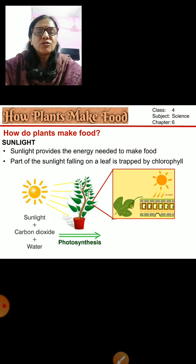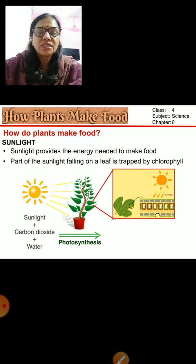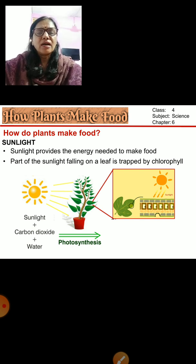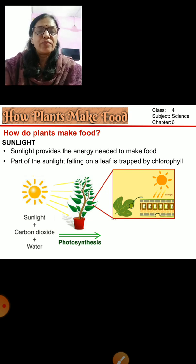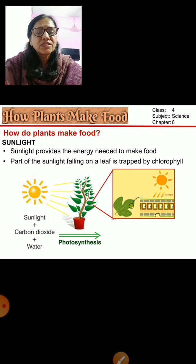As you know, photosynthesis is the process responsible for plants to make food. The things needed are chlorophyll, carbon dioxide, sunlight, and water. Sunlight provides the energy needed to make food, and the part of the sunlight falling on the leaf is trapped by the chlorophyll.